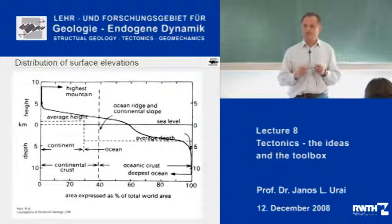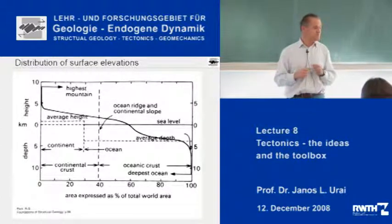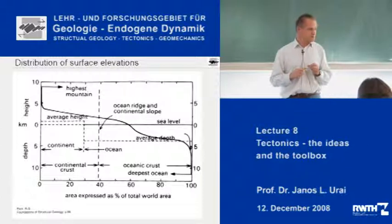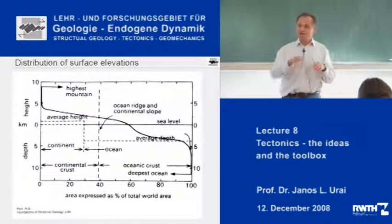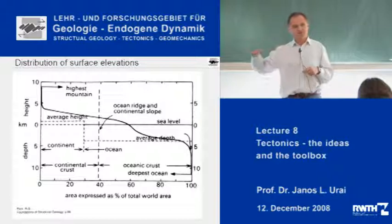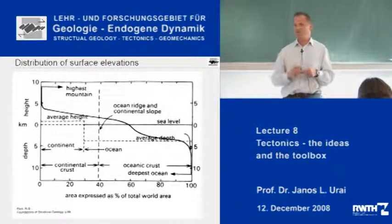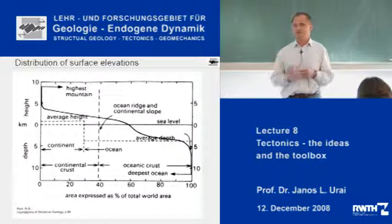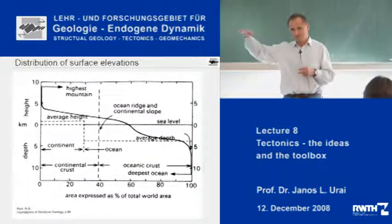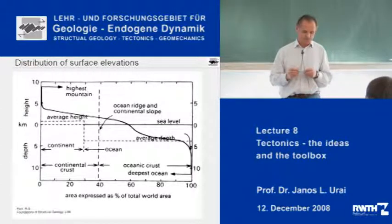Thomas Kuhn's famous book, The Structure of Scientific Revolutions, describes how science develops slowly and then suddenly there are big revolutions which completely change the science, and then it continues.